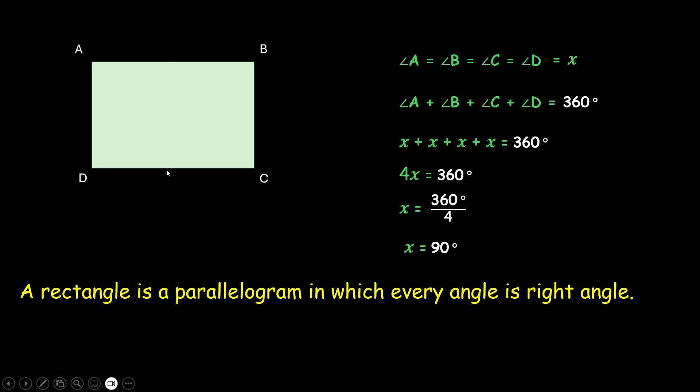Opposite sides are equal and parallel, opposite angles are equal, and the diagonals will bisect each other. But a rectangle will also have certain properties of its own. One being that every angle is 90 degrees.